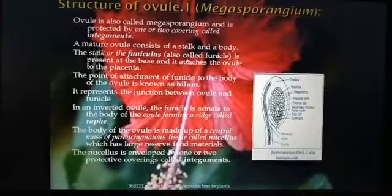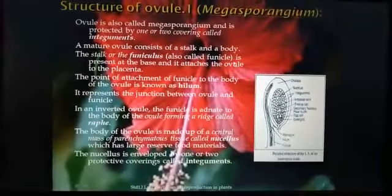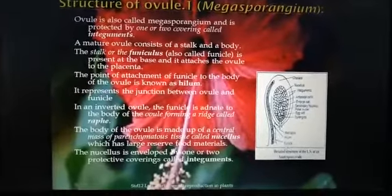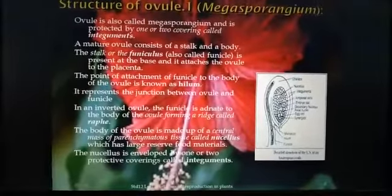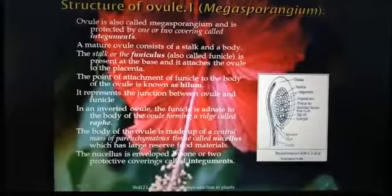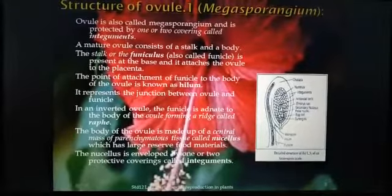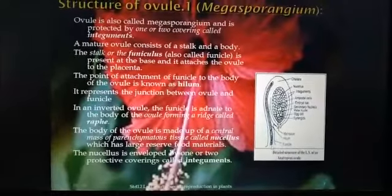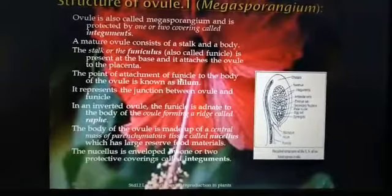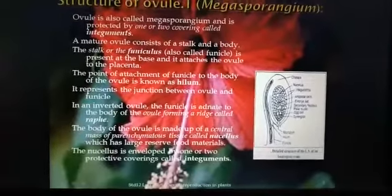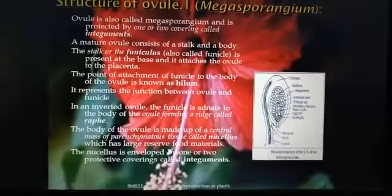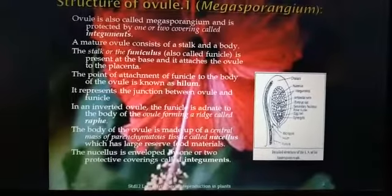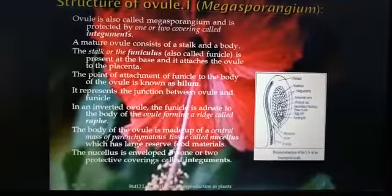The stalk of the ovule is called the funiculus, also called funicle. The funicle attaches the ovule with the placenta and the ovary wall. The point of attachment of the funicle to the body of the ovule is known as the hilum — this depressed area where the funicle meets the ovule body.